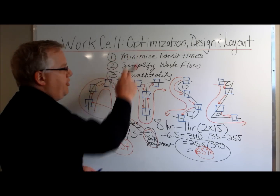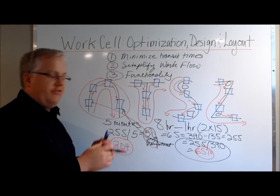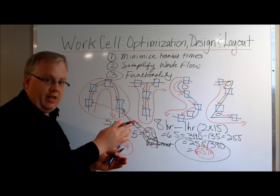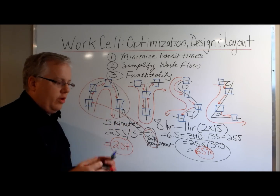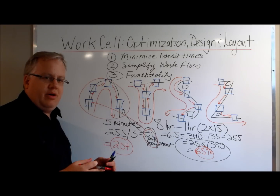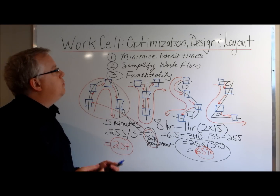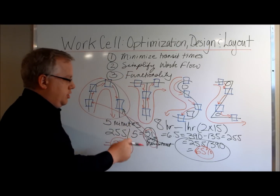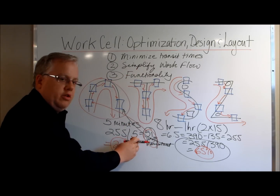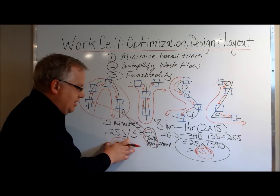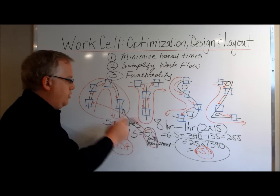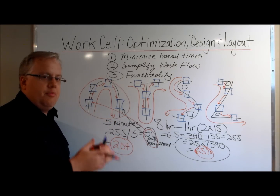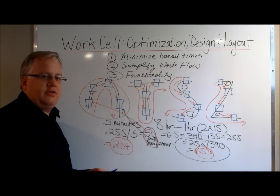To summarize: minimize transit times from one workstation to the next and from one cell to the next; simplify how work moves throughout the cell; make sure it's functional — don't limit your operators' space. Then determine your manufacturing productivity rate by workstation and set the bar by calculating the number of units you should produce per workstation and within the entire work cell. That's work cell optimization design and layout. Ian Johnson, driversuccess.com.